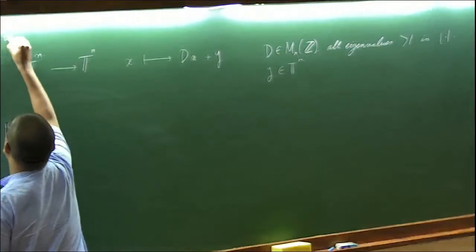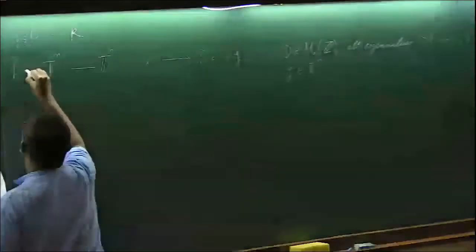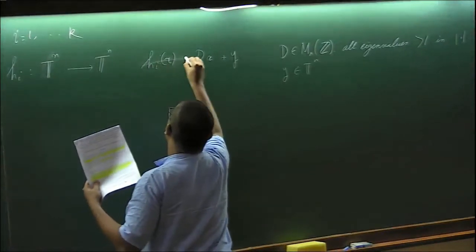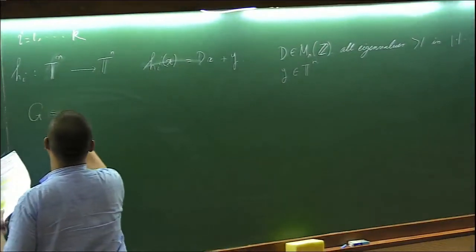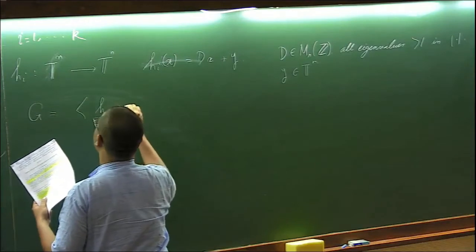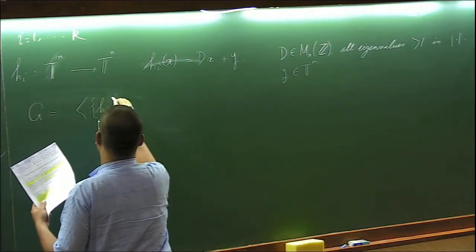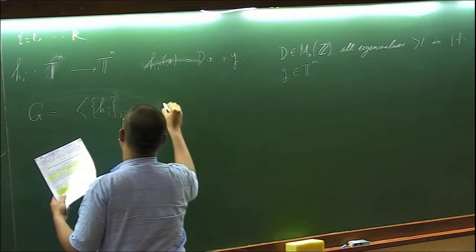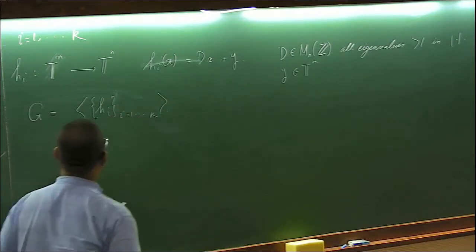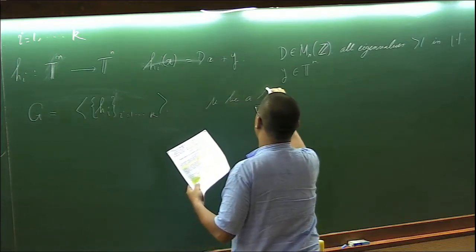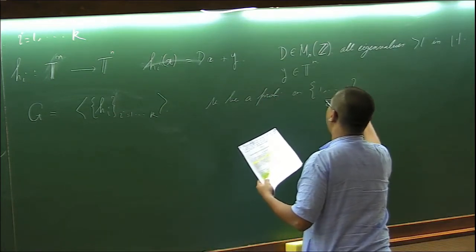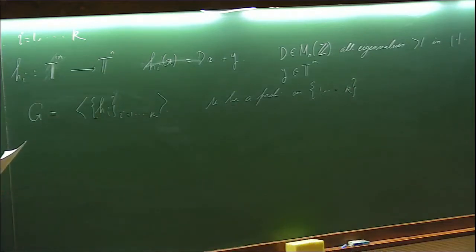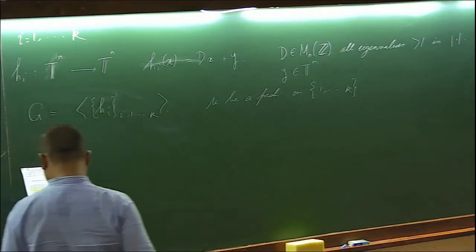For any i, I will have k such affine transformations and define G to be the semigroup generated by Hi. Put a probability measure on this finite set. And now you can view that probability measure as a probability measure on G supported on this finite set of indices.